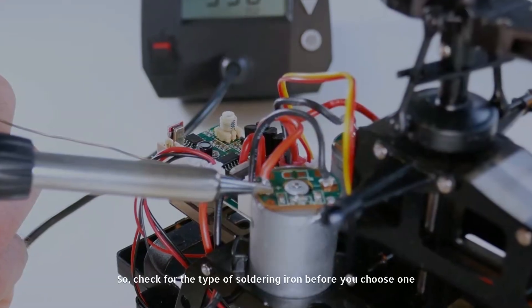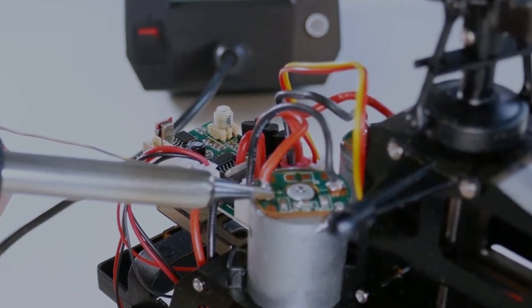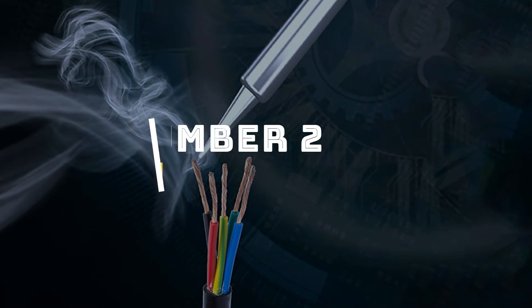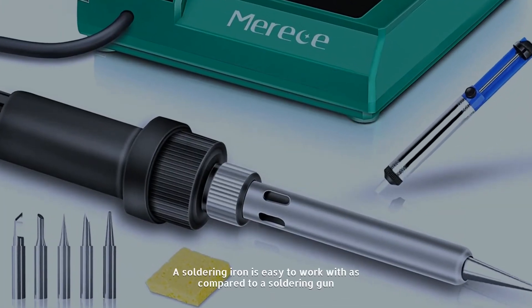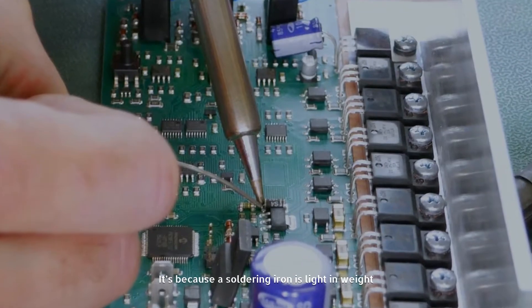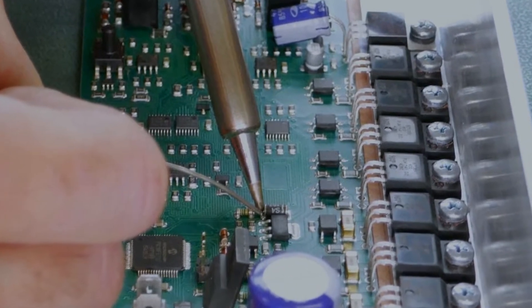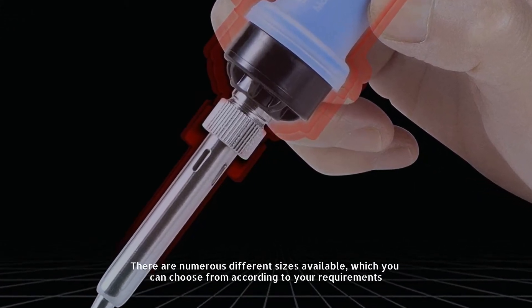Number two: Advantages. A soldering iron is easy to work with compared to a soldering gun because it's light in weight. There are numerous different sizes available which you can choose from according to your requirements.